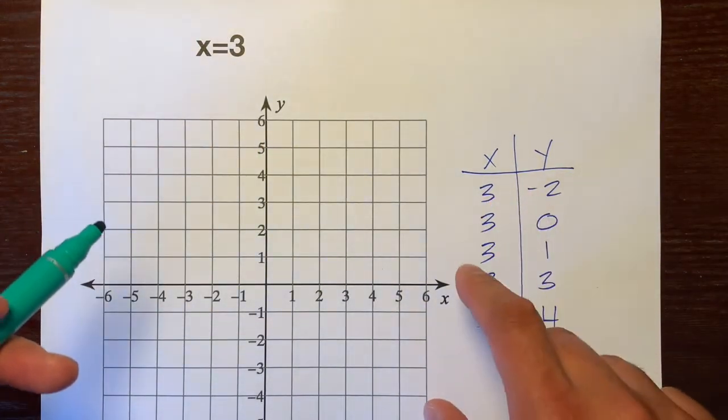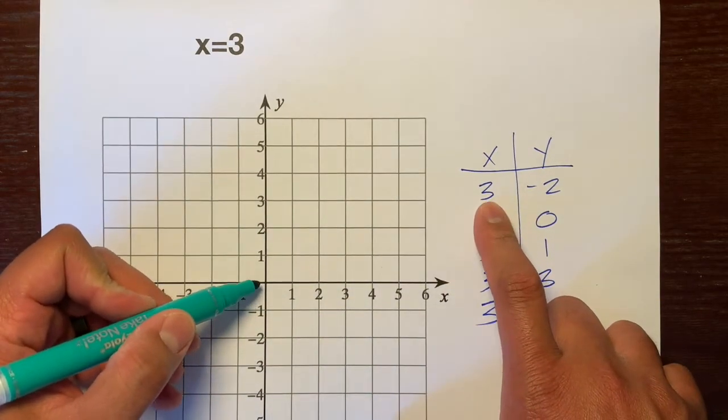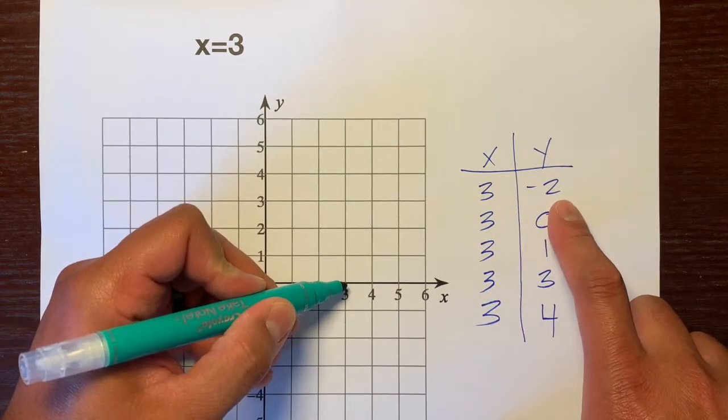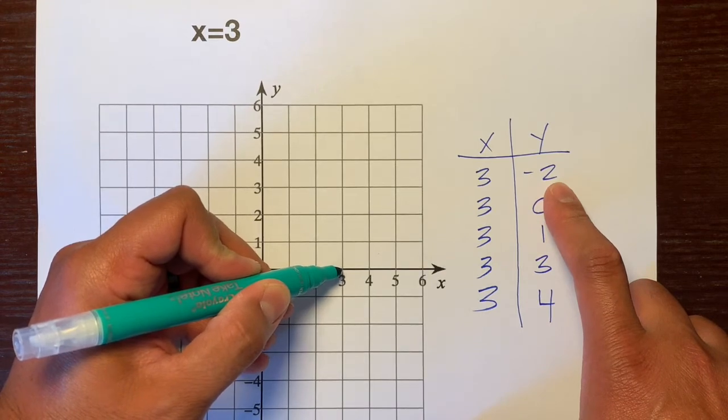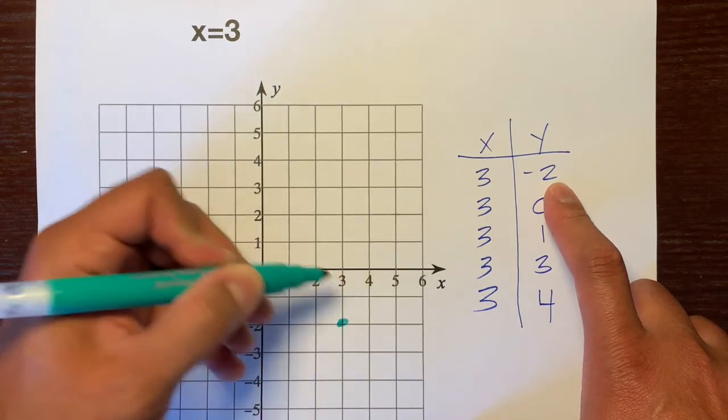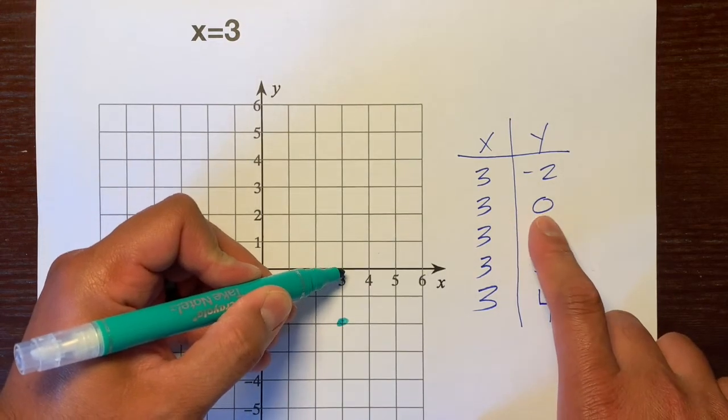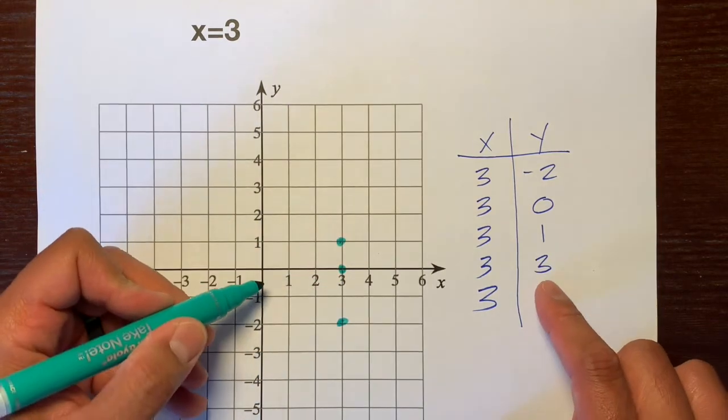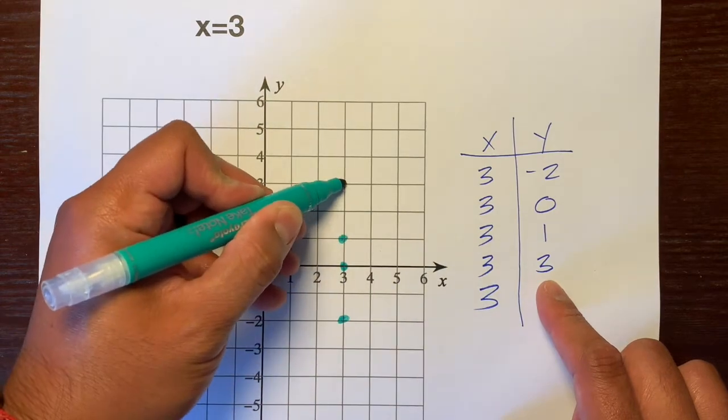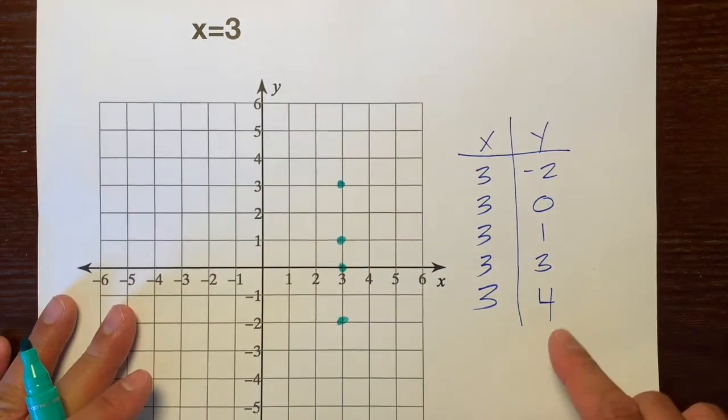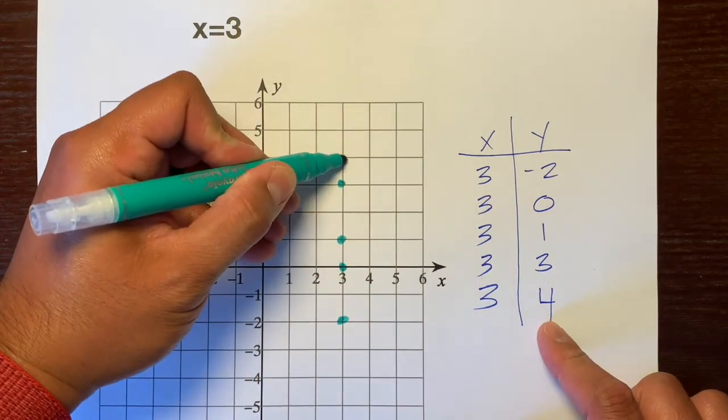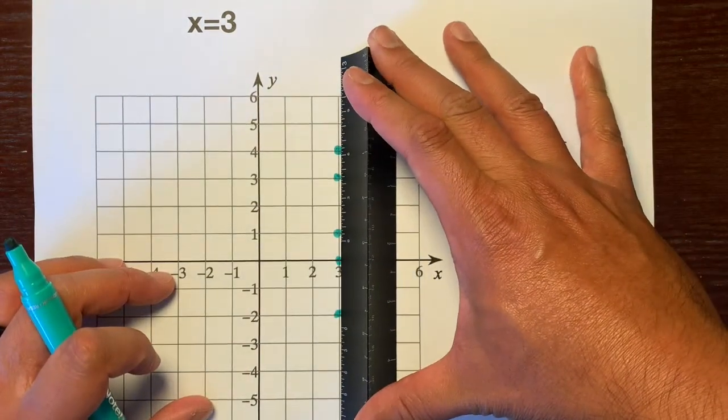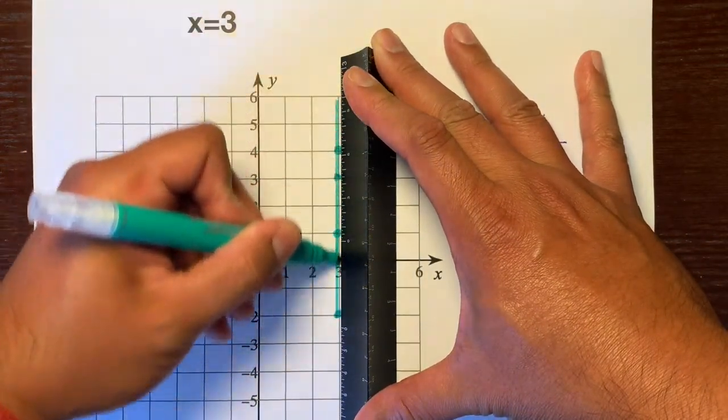Let's plot these points. So, x is at 3. Remember x is the horizontal axis. So here's 3. And then y is at negative 2. So we're going to go down to 1, 2. x is at 3 again. And y is at 0. So we don't move up or down. x is at 3. 1. x is at 3. 1, 2, 3. 3, 3 is right there. And x is at 3. And then we go up 4 there. And now let's connect those points. And I'm sure you guys can imagine how this line is going to look like.